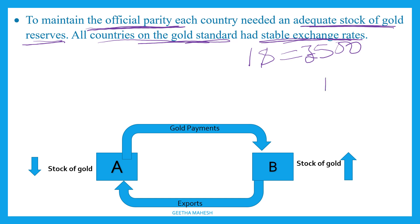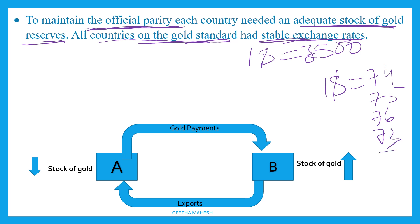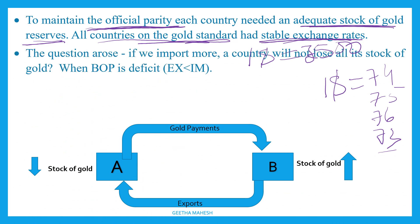Our paper currency fluctuates — $1.74 one day, $1.75 the next, or $1.73 the day after. Under the gold standard, this kind of fluctuation does not happen. The gold standard is stable and healthy.